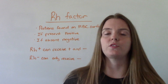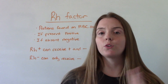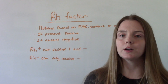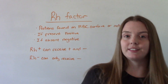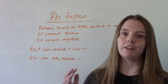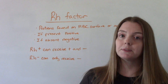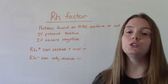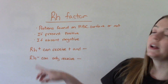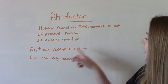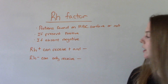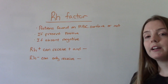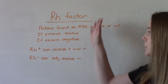Your Rh factor, or rhesus factor, is what determines whether you have positive or negative blood. It's a protein that's either found on the surface of your red blood cells — kind of like an antigen — or it's not. If it's present, it's positive, so you have a positive blood type. If it's absent, it's negative and you have a negative blood type. When it comes to transfusions, Rh positive blood types can receive both positive and negative blood. If you are Rh negative, you can only receive Rh negative blood. That's why it's super important to know not only your blood group, but also your Rh factor.